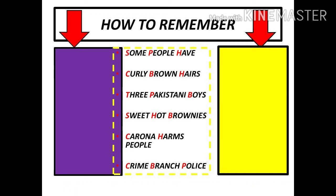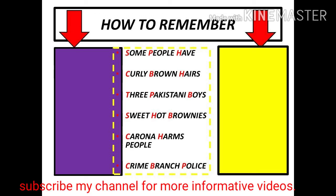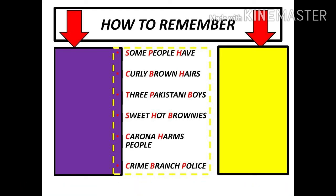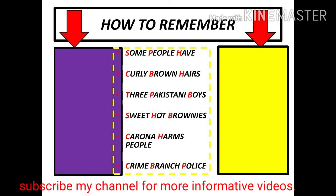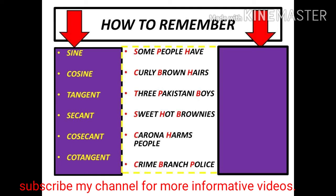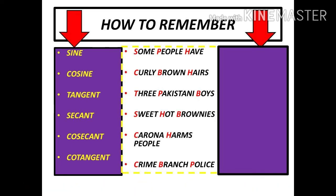After memorizing all these sentences, we have to keep in mind that each sentence has 3 words. These 3 words have 3 starting letters. We only need to keep in mind the starting letter of each word, then we will get the answer for the trigonometric ratios.